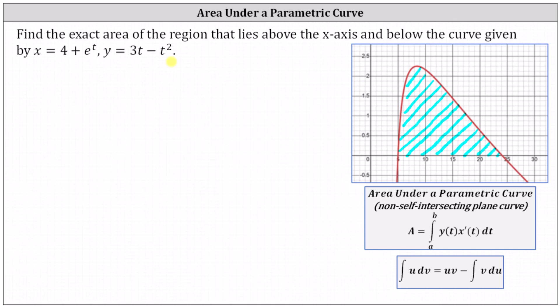To find the area under a parametric curve that is above the x-axis and is also non-self-intersecting, we use the formula: area equals the integral from a to b of y(t) times x prime of t dt. Notice we're integrating with respect to t, which means the first step is to determine the t values where we have the two x-intercepts, one on the left and one on the right.